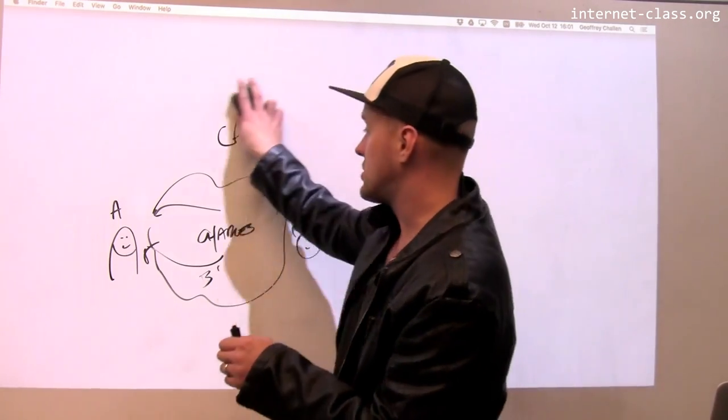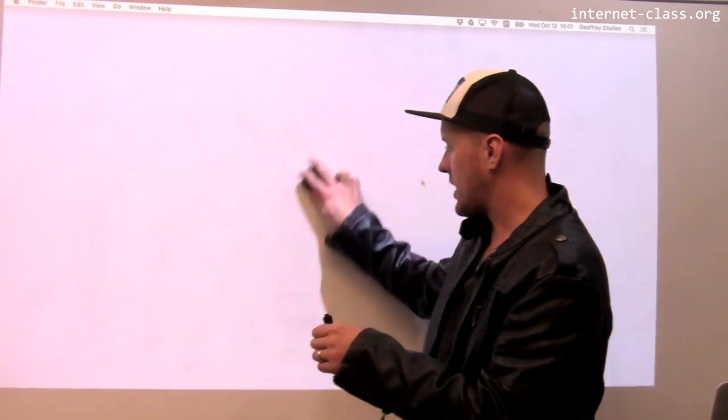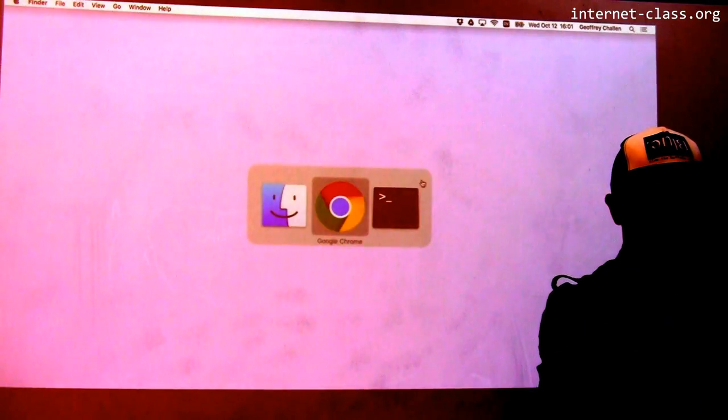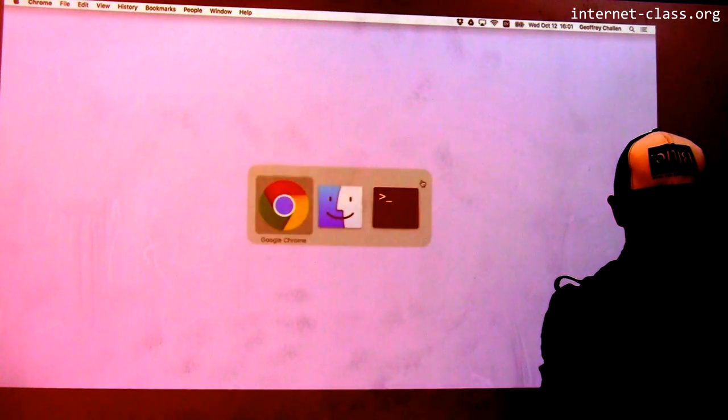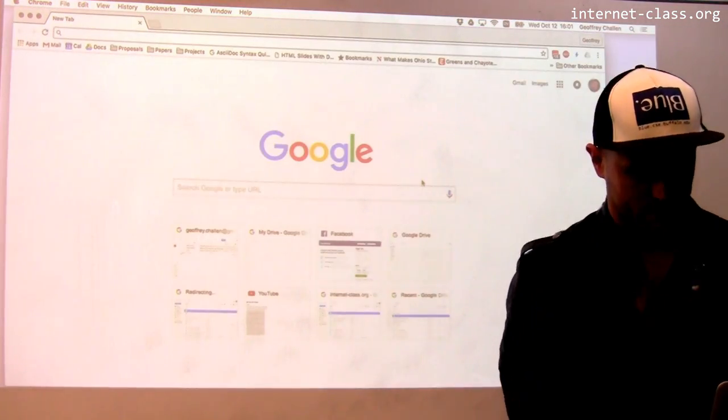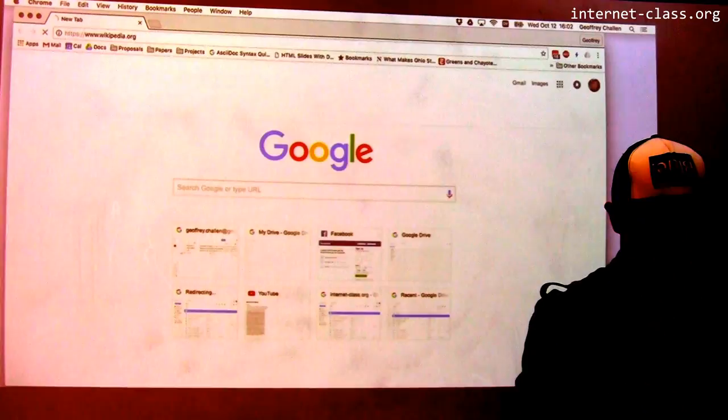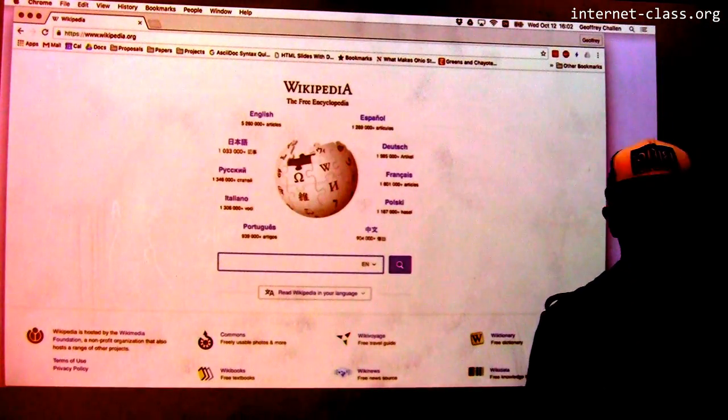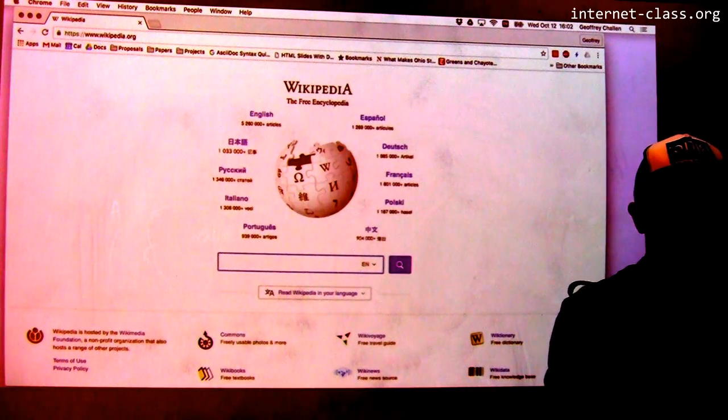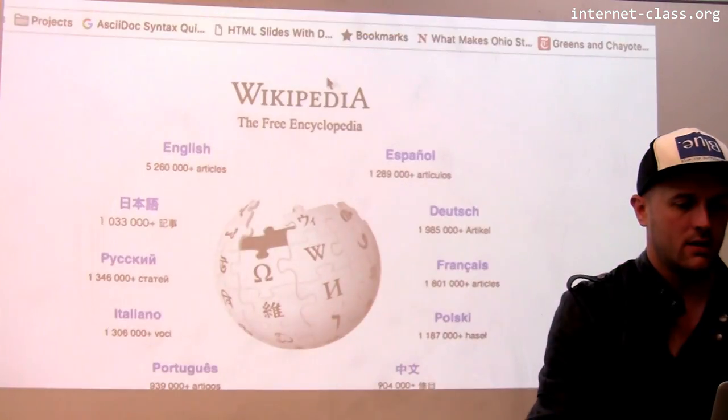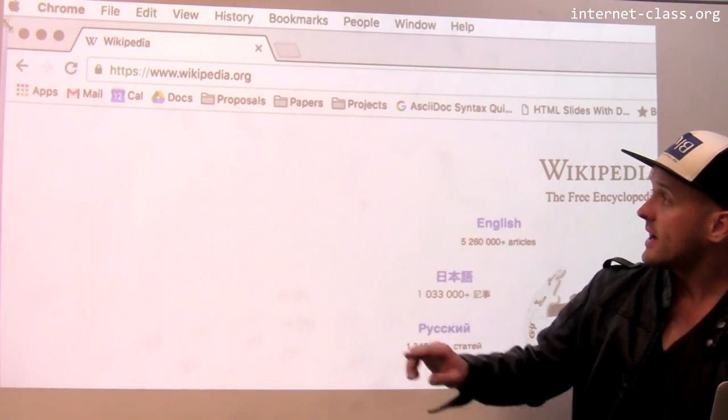So we can see this in action when we go online in our web browser. So let's open up a browser here and do a quick example. Open Chrome. Here we go. So let's go to Wikipedia or something.